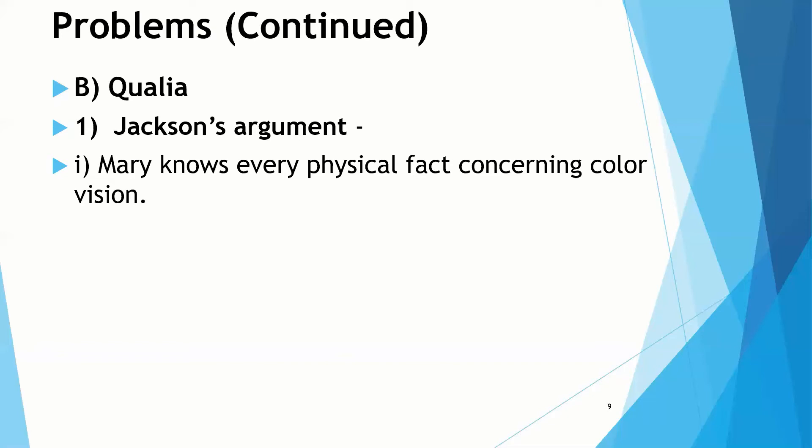But the problem is, the catch is here, there's something about Mary. Mary does not know what it's like to see red. Mary has been fitted with glasses, or maybe contacts, that have been permanently attached to her eyes that make her see everything in black and white. She has never experienced the various colors that she has studied her entire life.